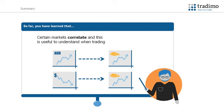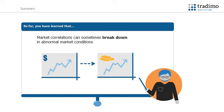So far, you have learned that certain markets correlate, and this is useful to understand when trading. Examples of positive correlation include the Australian dollar and gold, and oil and the Canadian dollar. An example of negative correlation includes the US dollar and gold. Market correlations can sometimes break down in abnormal market conditions, such as seen with the US dollar and the price of gold.